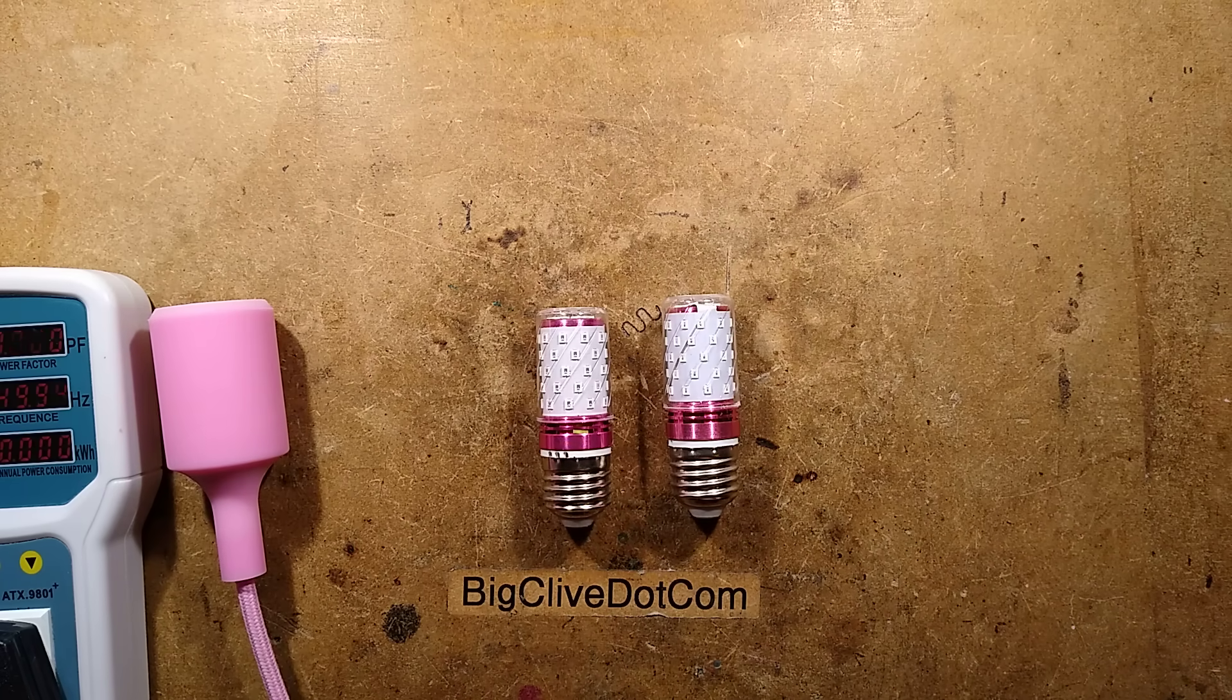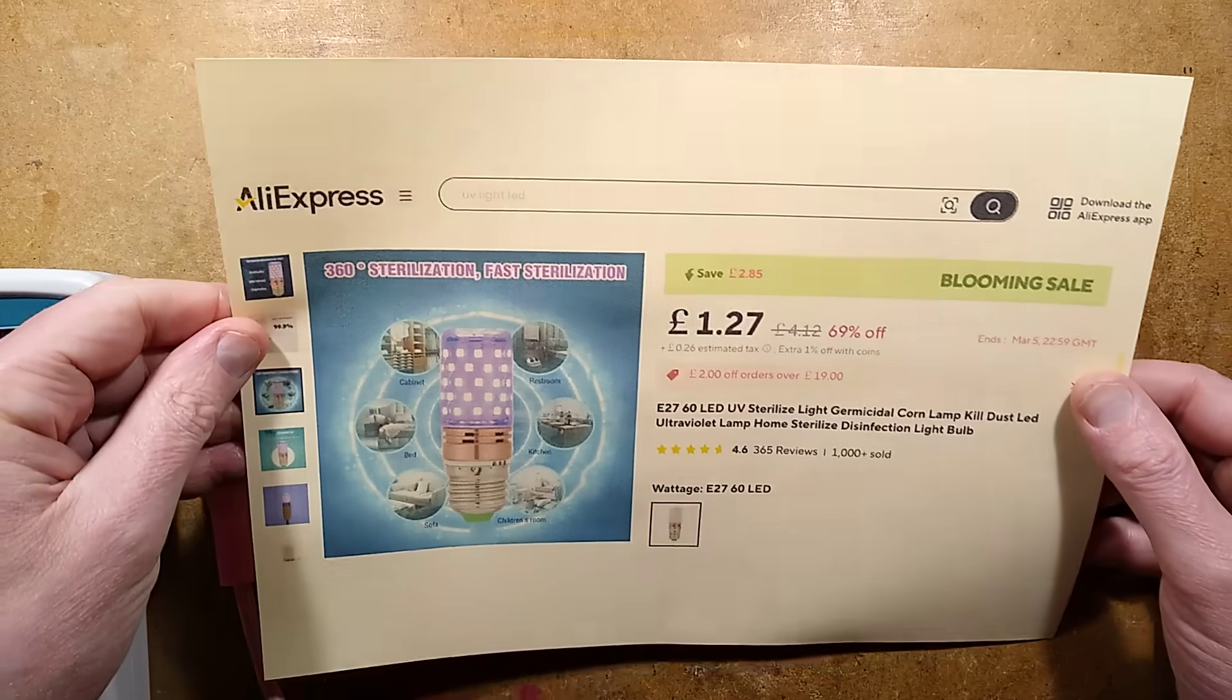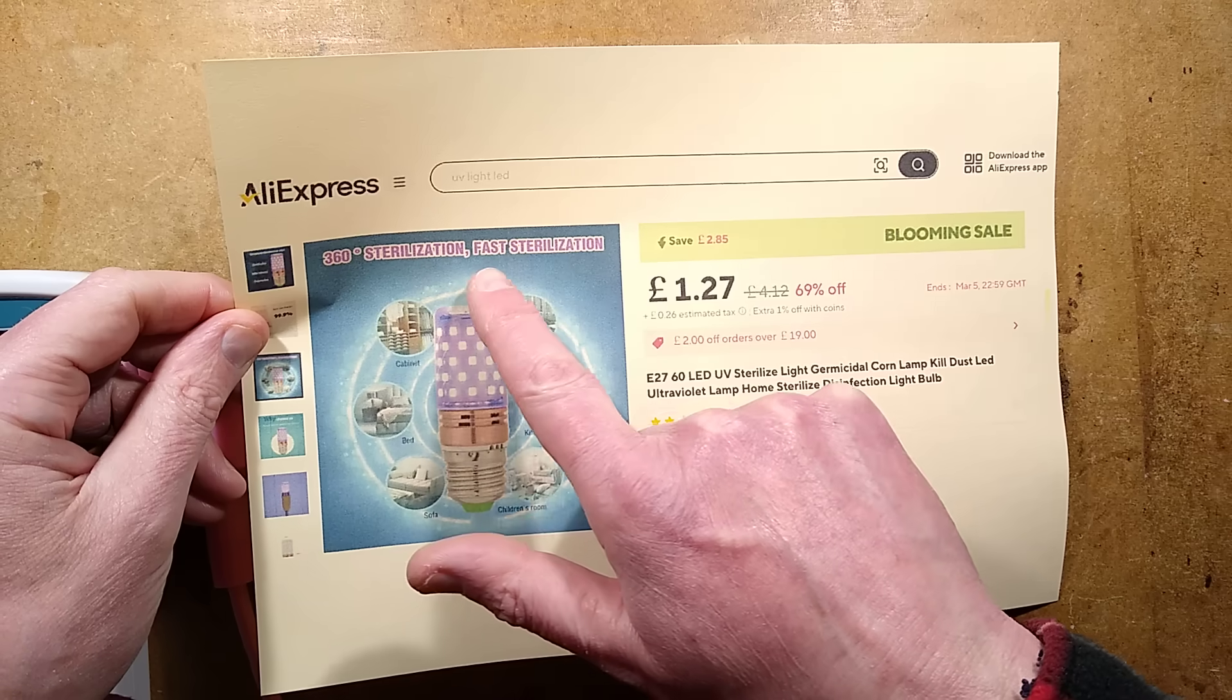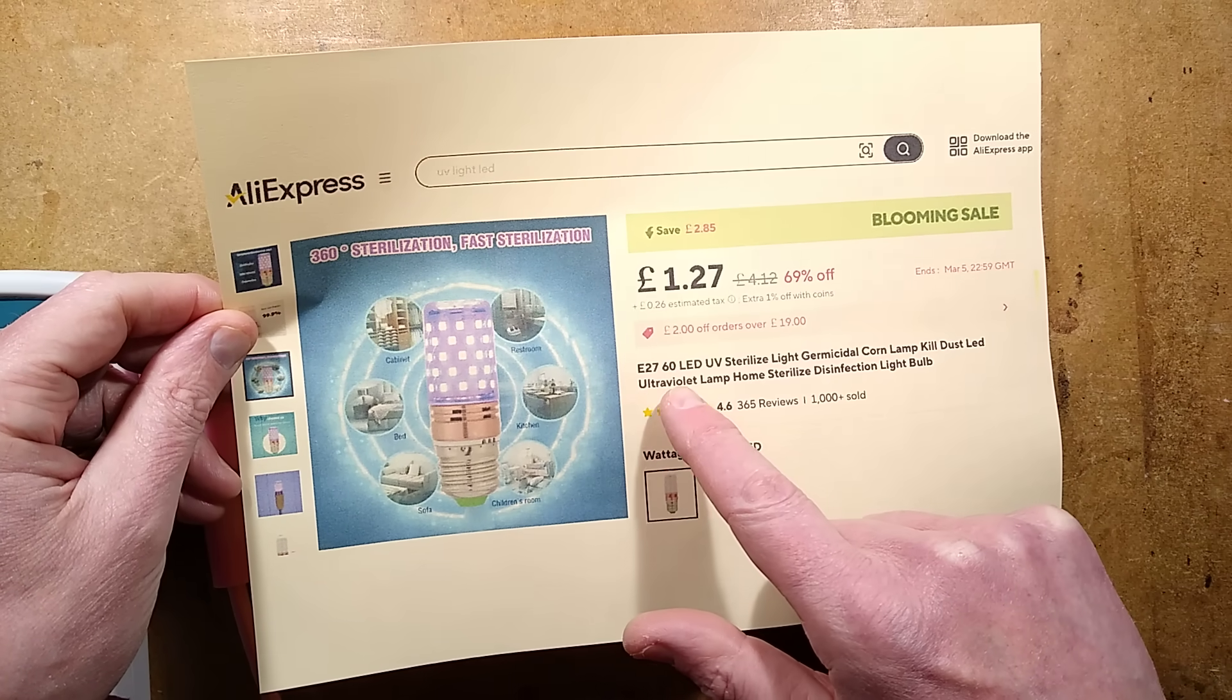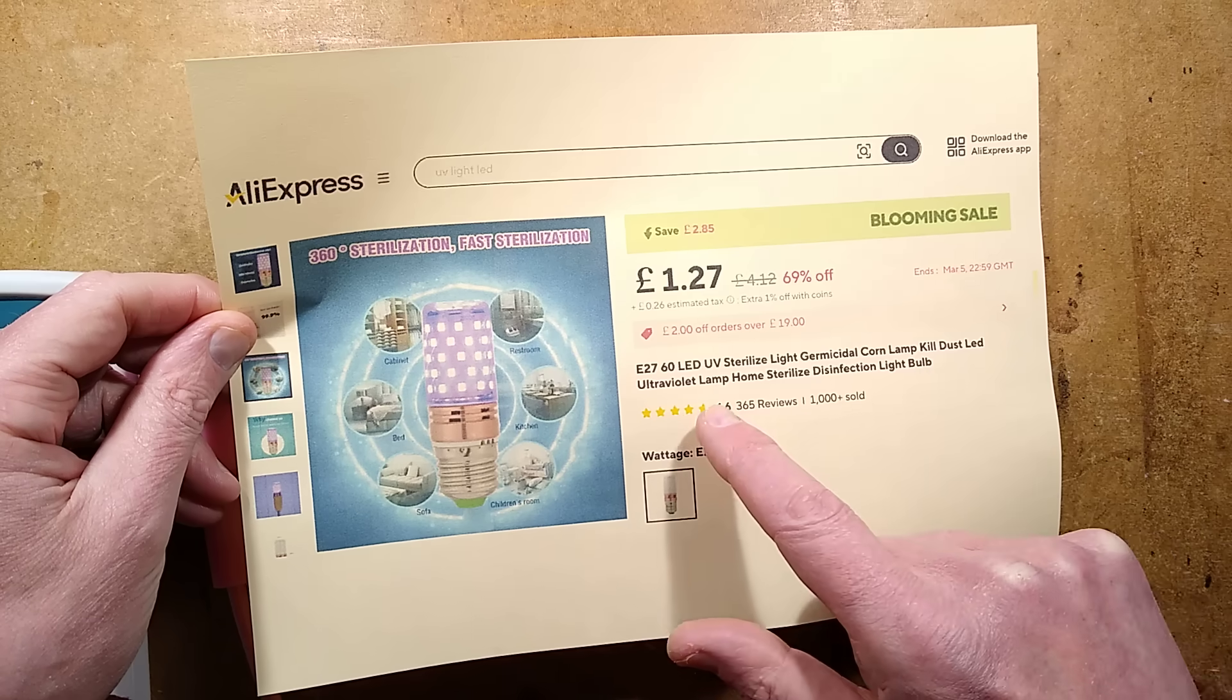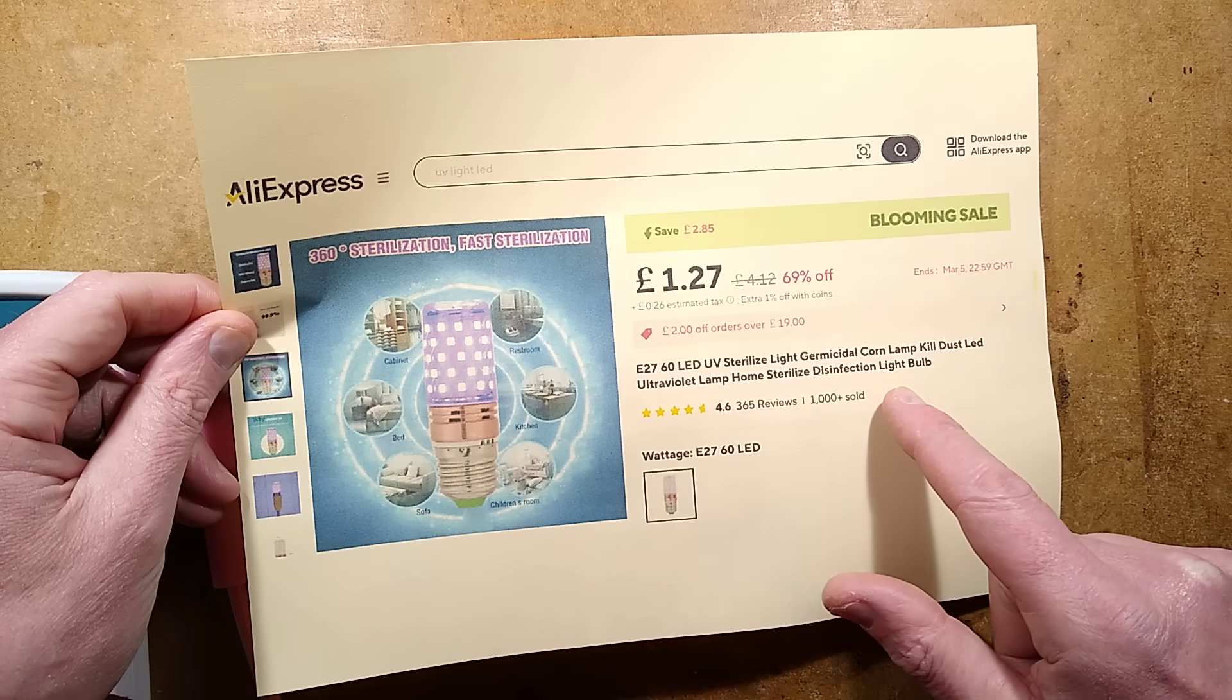And the listings for these typically reads something like this: 360 degrees sterilization, fast sterilization. E27, 60 LED UV sterilized light germicidal corn lamp, kill dust LED ultraviolet lamp, home sterilized disinfect light bulb.